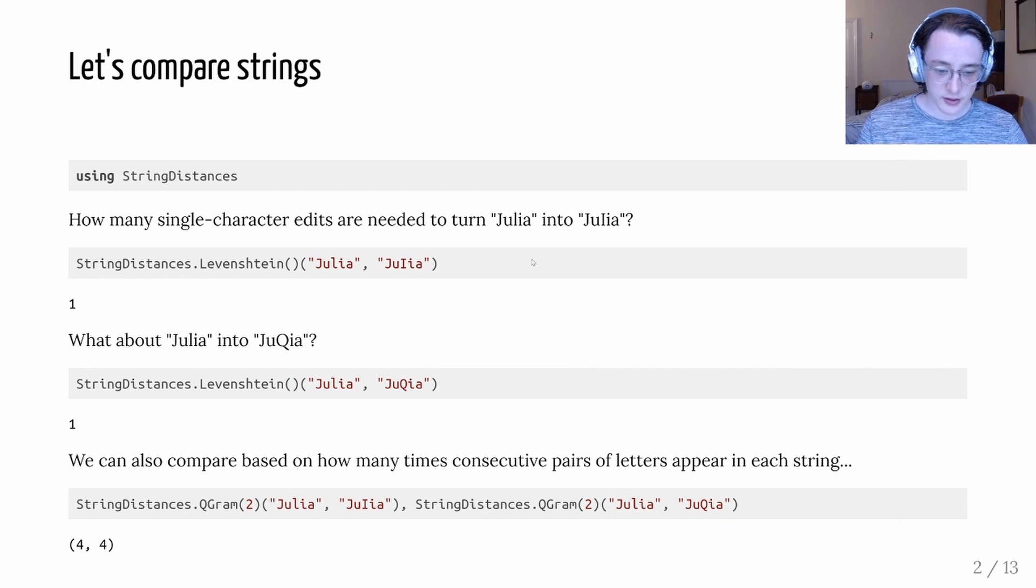So distances like the Levenstein distance don't take into account the visual nature of how these strings look. And there's lots of other distances we could try. For example, a distance based on how many consecutive pairs of letters appear in each string. But all these distances are capturing interesting things about strings that are not their visual aspect. So how do we do that?